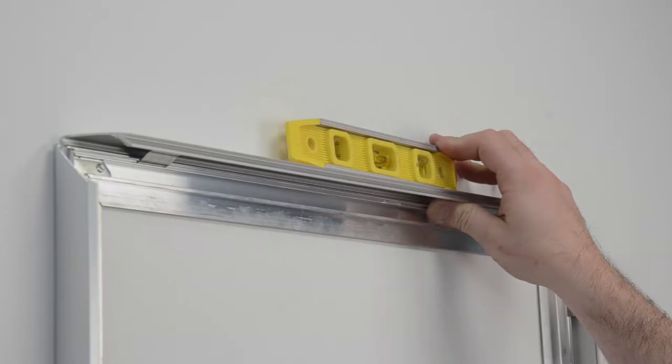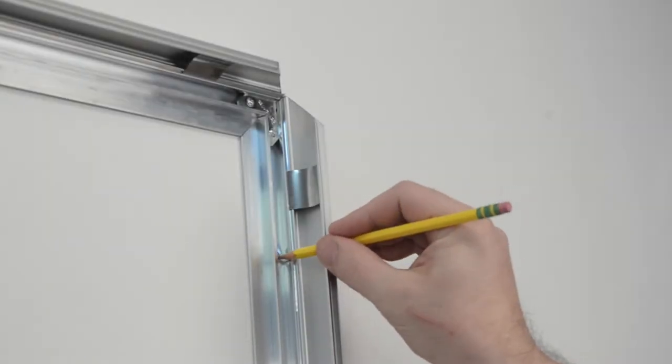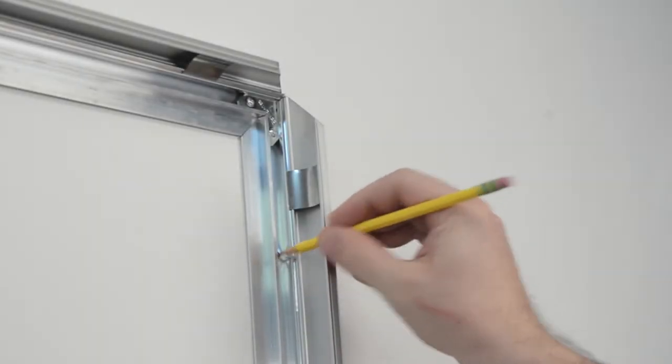Use the level to line up the frame. Once level, use the pencil to mark the four holes where the wall anchors and screws will be inserted.